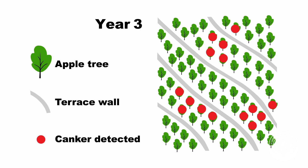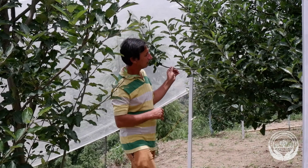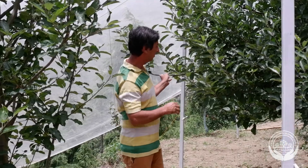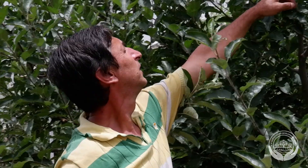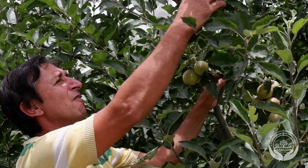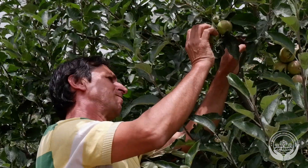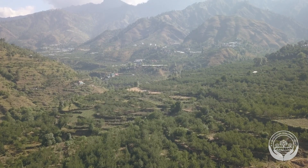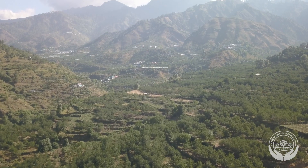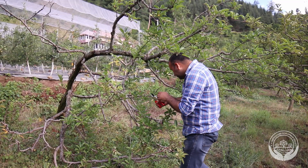To understand disease progression in your orchard over the years, it is recommended to keep good records and orchard maps. This will help you know where your infected trees are and if your canker management is successful or if you need to remove cankers more often. Remember, the most powerful tool is inoculum management or sanitation.